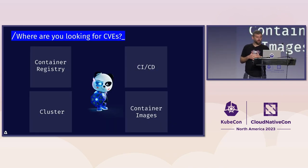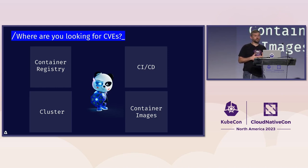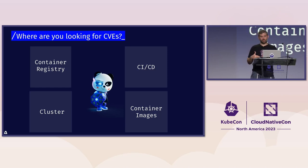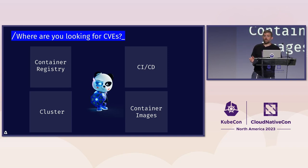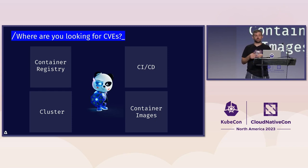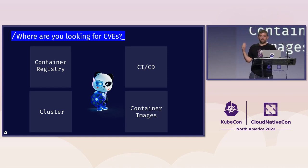Where are we looking for vulnerabilities? We look in our images, in our CI/CD pipeline when we are building our own images, when delivering them to our registry, or inside our registry. One of the most important things is to block images with critical vulnerabilities in your CI/CD pipeline, but it's even more important to monitor the vulnerabilities you have in your production software. Why? Because every day there are more than 100 new CVEs published by NVD. Every day your software runs in production, there is a higher chance that there is a vulnerability lurking that attackers can exploit.